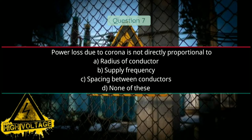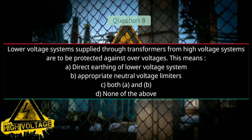Question number seven: Power loss due to corona is not directly proportional to — Option A: radius of conductor, Option B: supply frequency, Option C: spacing between conductors, and Option D: none of these. Answer will be C, spacing between conductors.